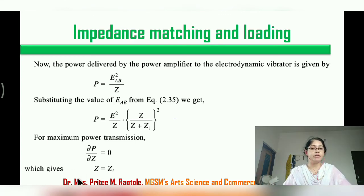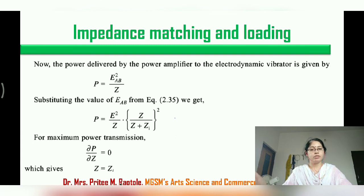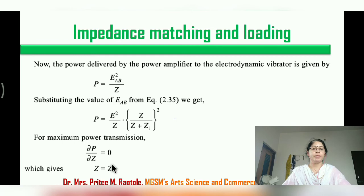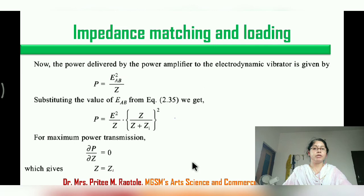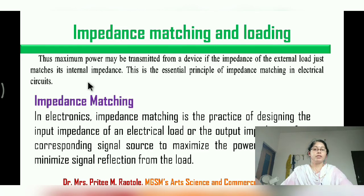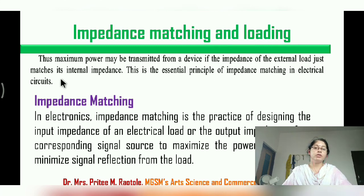When we apply maximum power delivery from source to load, the internal impedance and the external or output impedance must be equal — that is called impedance matching: Z equals ZI. Maximum power is transmitted from a device when the impedance of the external load exactly matches the internal impedance. This is the essential principle of impedance matching.